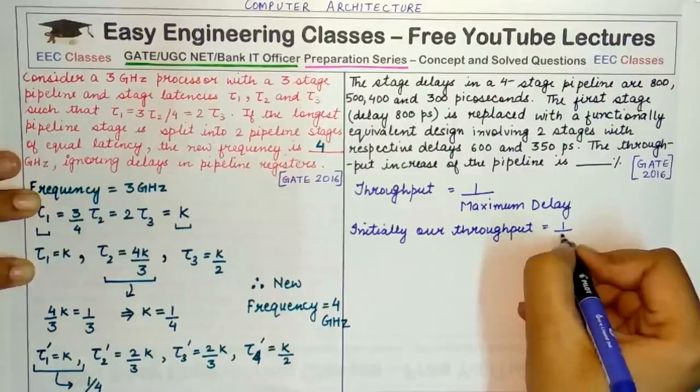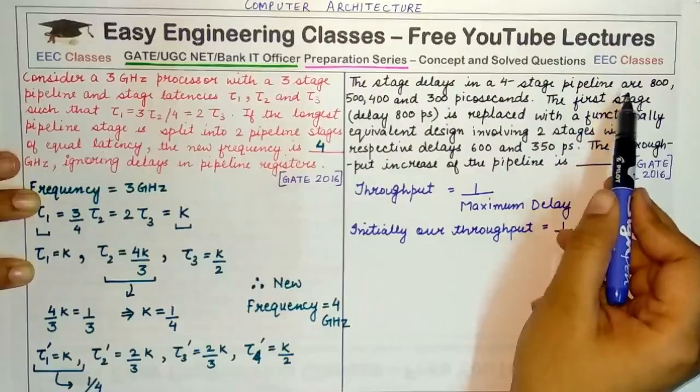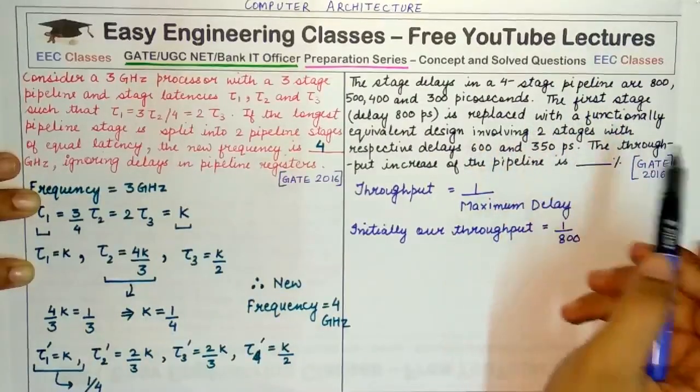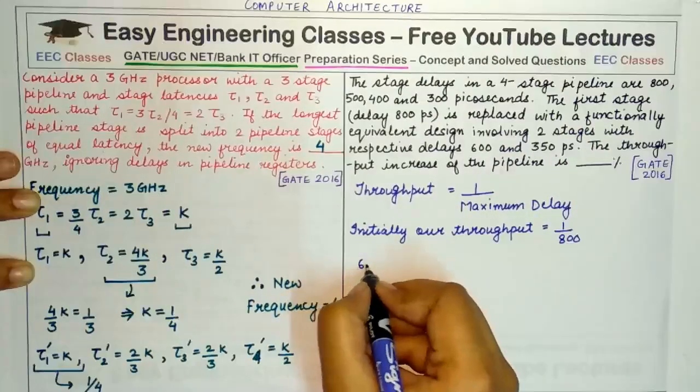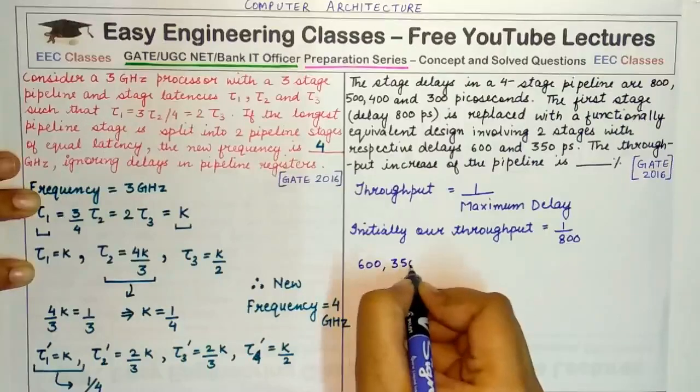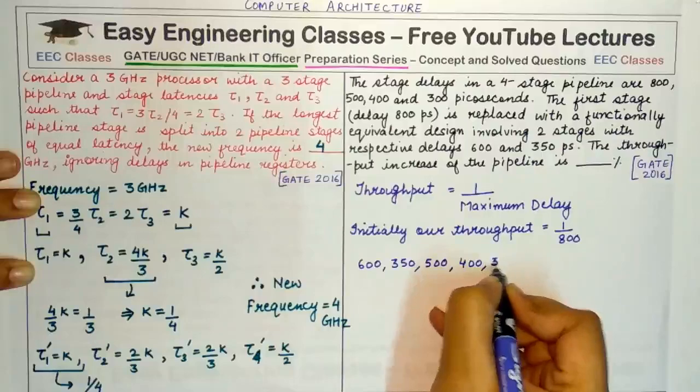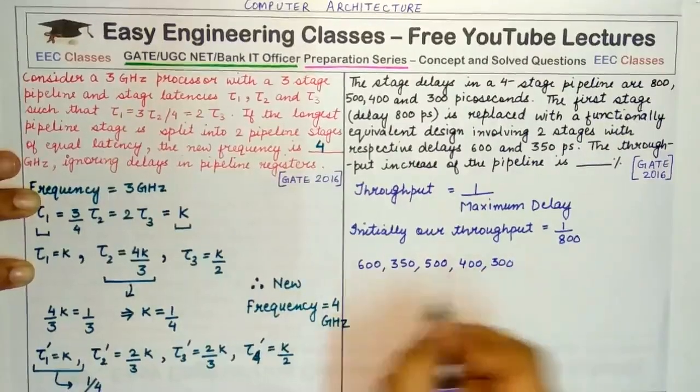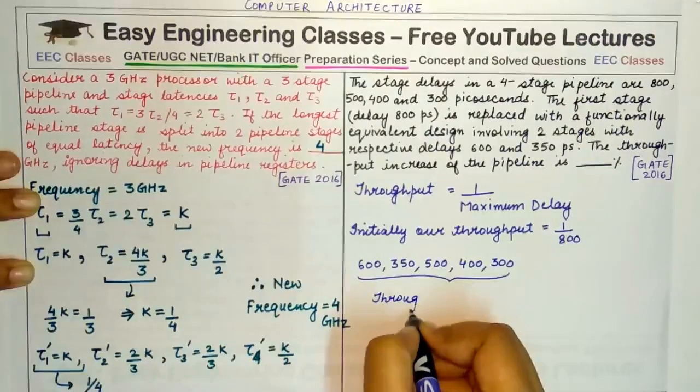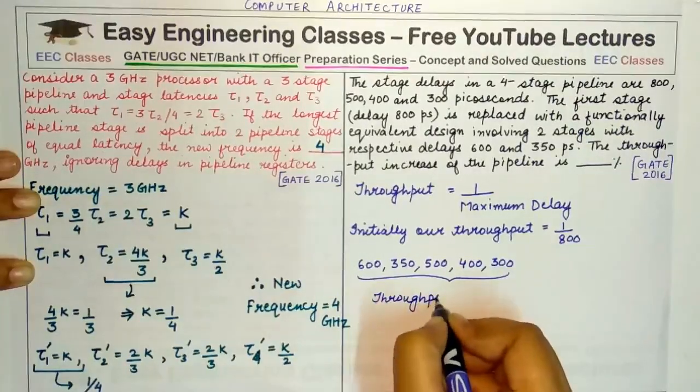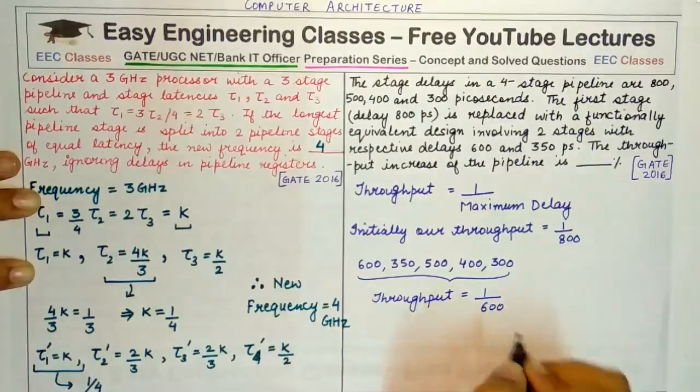And later, when this first stage is replaced by a functionally equivalent design involving two stages, what are our new delays? We have 600, 350, 500, 400, and 300. Now these are the new delays. So in this case, the throughput would be 1 divided by the maximum delay, which is 600.